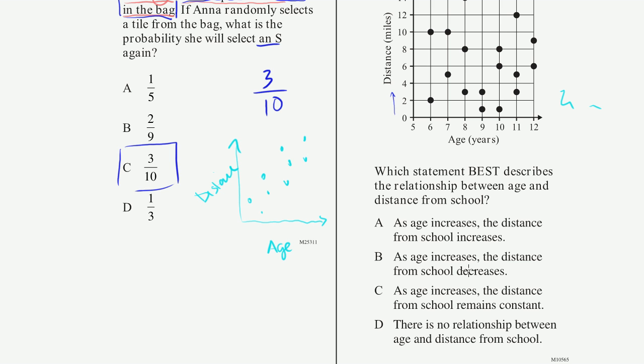B, as age increases, the distance from school decreases. Well, I don't even see a downward trend either. That, what B is describing, the data would look like this, where we have kind of this downward trend. I don't see that here either.